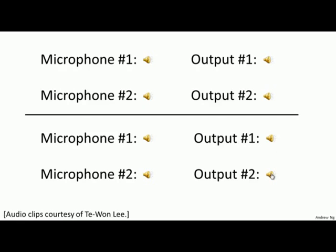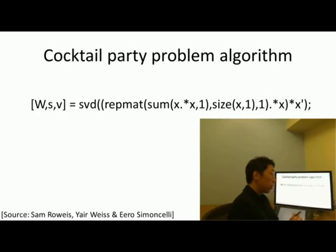Not too bad. In that second output, it managed to get rid of the voice entirely and just cleaned up the music and got rid of the counting from one to ten. So you might look at an unsupervised learning algorithm like this and ask, how complicated is it to implement this? It seems like to do this audio processing, you need to write a ton of code, or maybe link into a bunch of C++ or Java libraries to process audio. It turns out the algorithm to do what you just heard can be done with one line of code, shown right here.